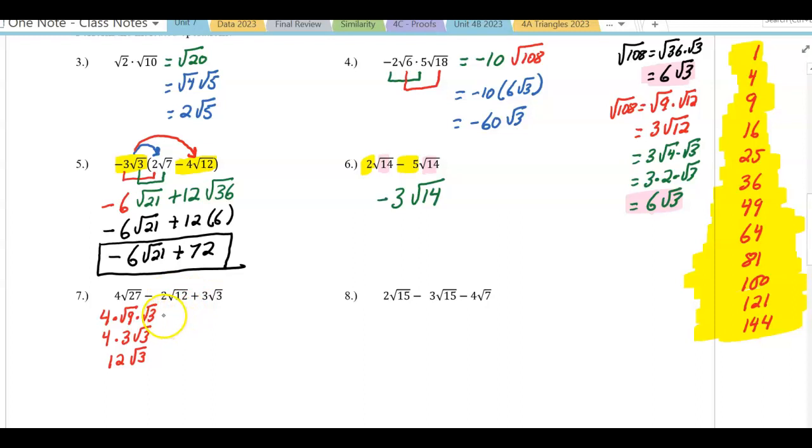The square root of 12 also breaks down, so it's negative 2 times the square root of 4 times the square root of 3, which is negative 2 times 2 square root of 3, which is negative 4 square root of 3.